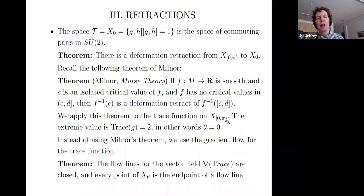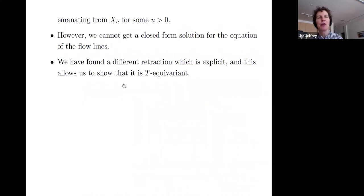We apply this theorem to the trace function on x_(0,pi). The extreme value is the point where our theta is zero. In fact, instead of directly using Milnor's theorem, we use the gradient flow for the trace function. We find that the flow lines for the vector field given by the gradient of the trace function are closed and every point of x_theta is the endpoint of a flow line that comes from x_u for some positive u. We can't get a closed form solution for the equations of the flow lines. We did find a different retraction which is explicit and this is what enables us to show that there is a T-equivariant homeomorphism.